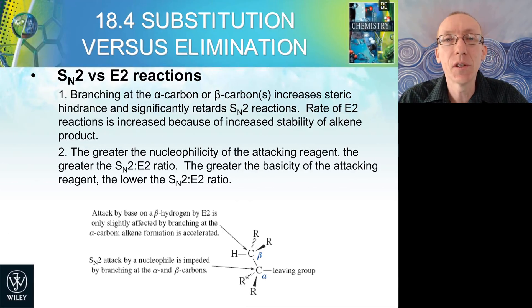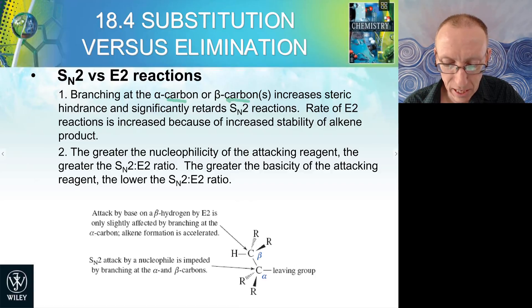If we look at SN2 versus E2, branching at the alpha carbon or the beta carbon increases the steric hindrance around the carbon that undergoes reaction. And that really slows down the rate of SN2 reaction. And so the rate of E2 reaction is increased because it doesn't rely on attacking that carbon that is attached to the leaving group.